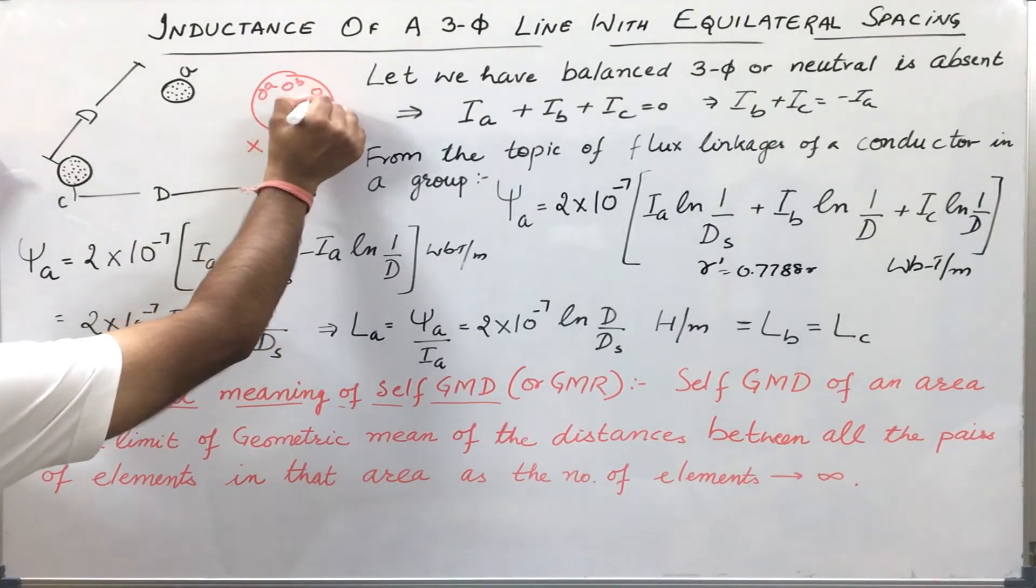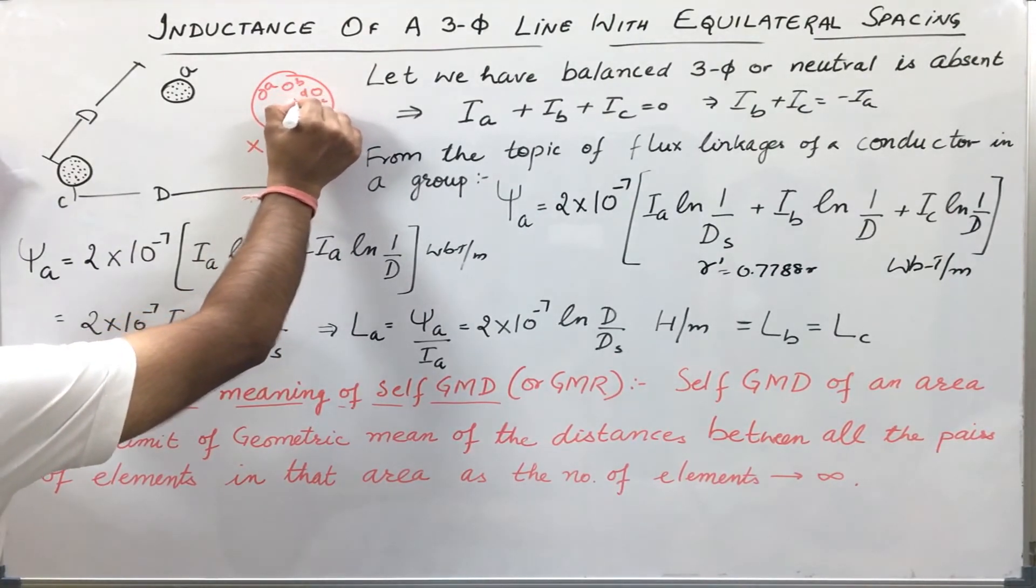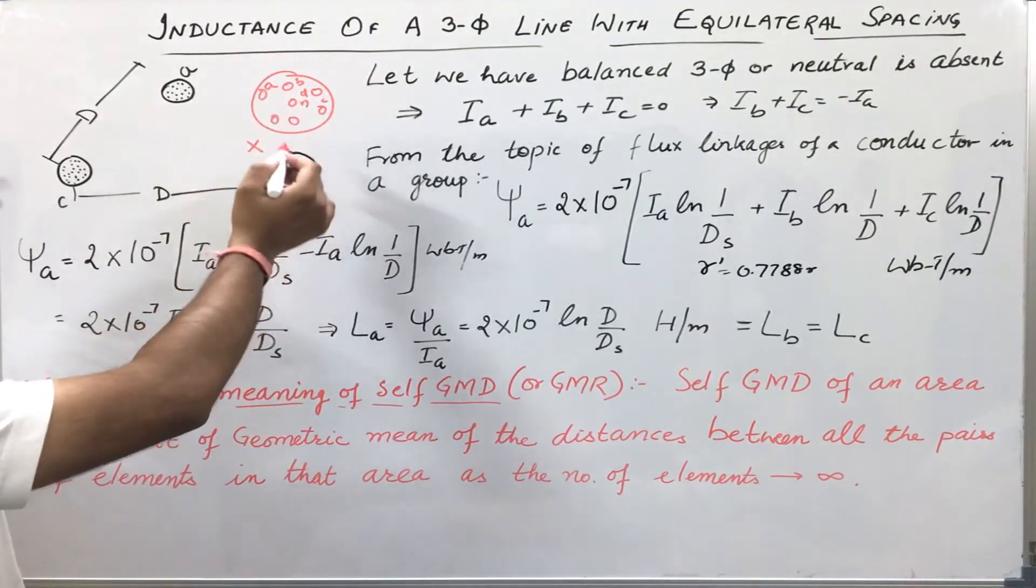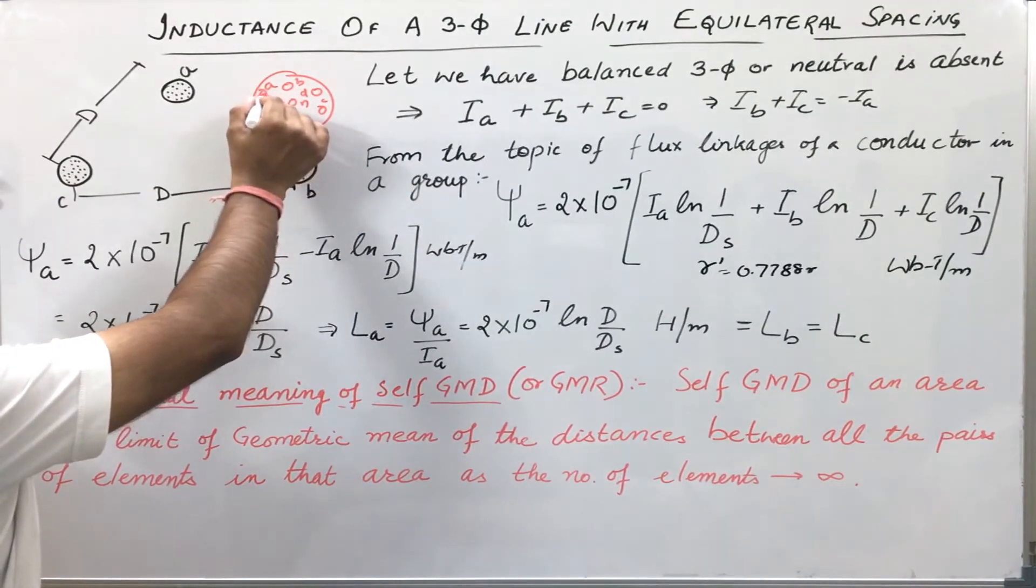Let us say there is a conductor X and it is composed of many strands: A, B, C, D up to N, many strands. So, what will be the GMR? GMR will simply be the geometric mean of these distances.